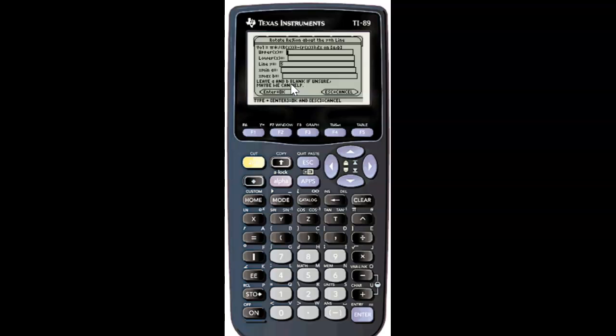Let's say the upper function is 5x, so we type in 5 times x. We go down and then we enter 5 times square root of x.